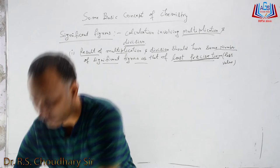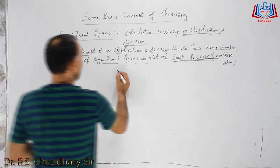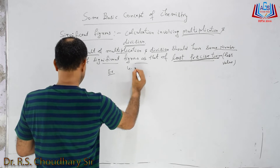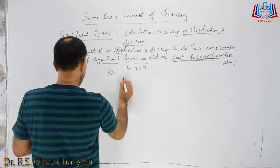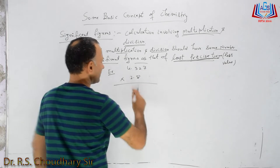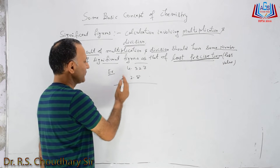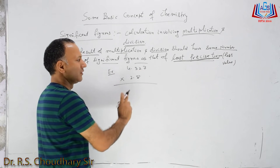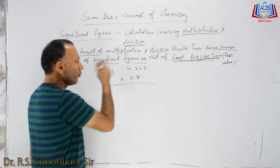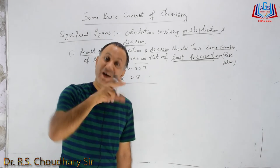I am taking an example. For example, it is given: 3.27 multiplied by 2.8. There are two values given. How many significant figures will there be in the final result?